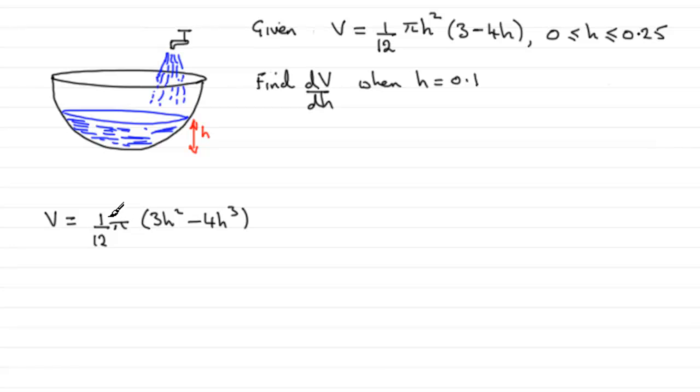It's up to you though whether you expand the whole lot. So when we differentiate it, we have therefore dV/dh is going to equal (1/12)π. And now I just have to multiply this by the differential of the bracket.